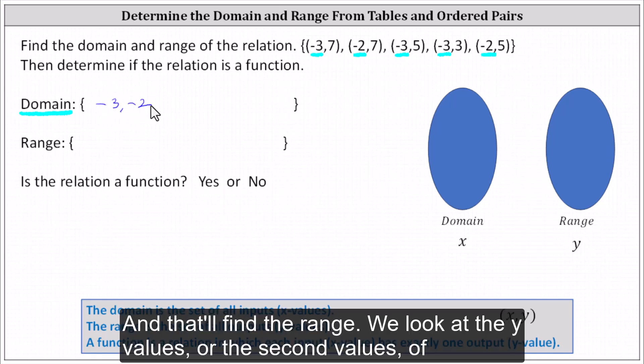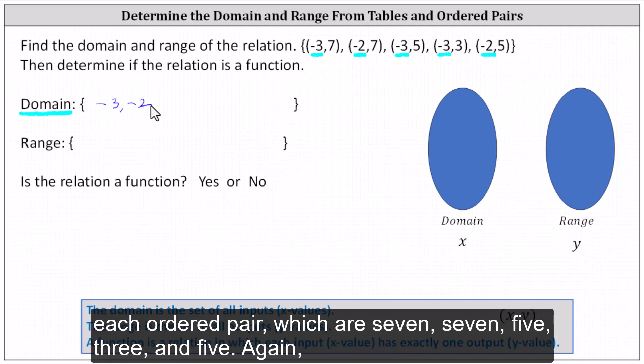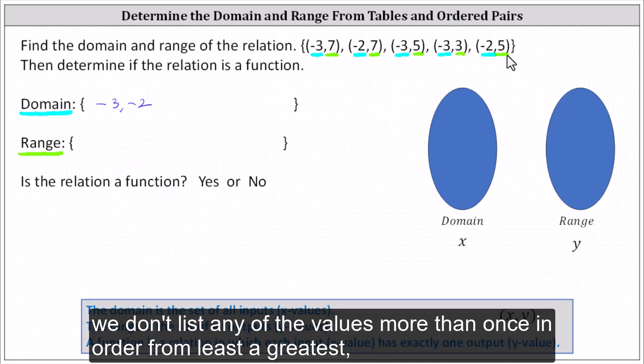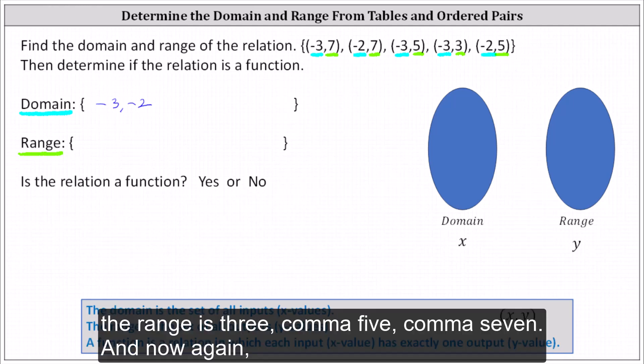And now to find the range, we look at the y values, or the second values, of each ordered pair, which are seven, seven, five, three, and five. Again, we don't list any of the values more than once. In order from least to greatest, the range is three, five, seven.